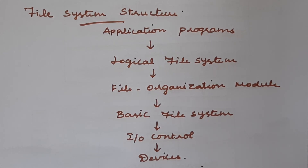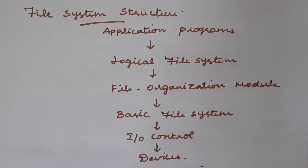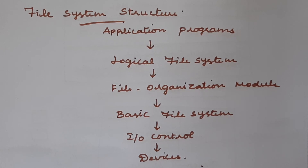Cache memory is used to hold frequently accessed file system metadata in order to improve system performance. Whatever file system is referenced frequently is stored in the cache or memory buffer.